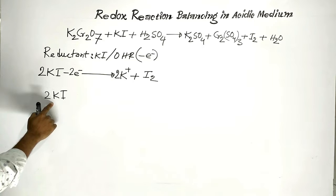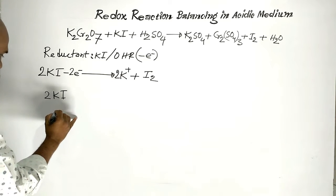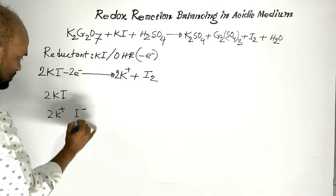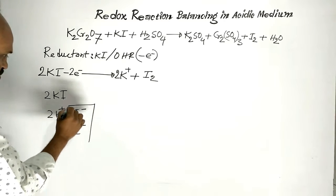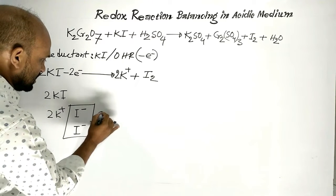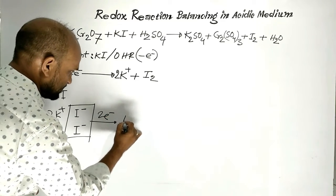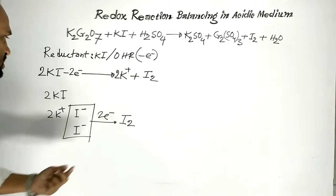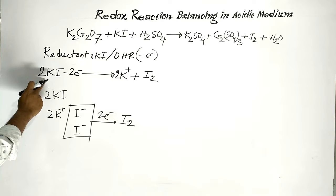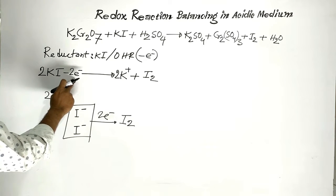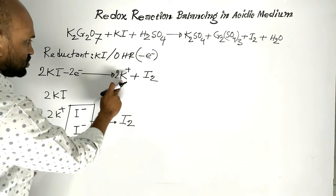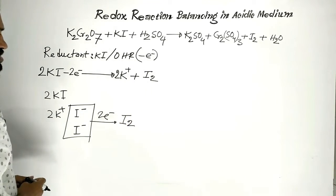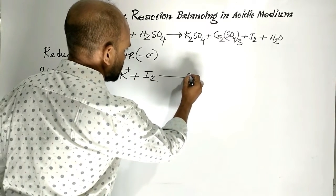Two molecules of potassium iodide ionize to give two potassium ions and two iodide ions. These two iodide ions release two electrons and change to an iodine molecule. In this way, two molecules of potassium iodide release two electrons, and as a consequence, two potassium ions and one iodine molecule are formed. Suppose this is equation number one.